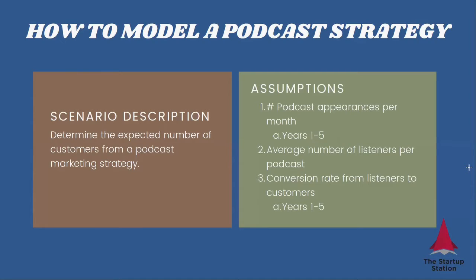So how exactly do you do that? What we want to determine here is how many customers we can get from this strategy. We need to figure out how many times you think you're going to appear on a podcast per month for years 1 to 5. This will come from your marketing strategy, maybe a PR firm. You want to think about what podcasts you want to appear on and what is the average number of listeners per podcast you can expect to reach every time.